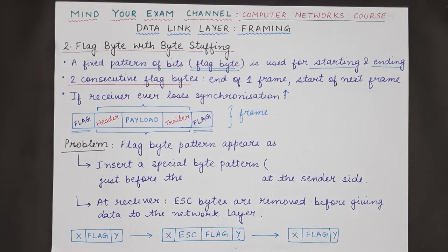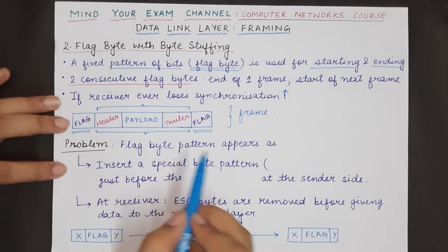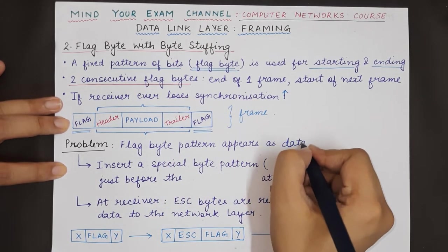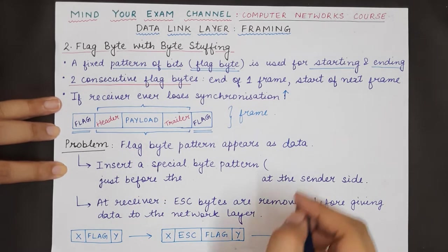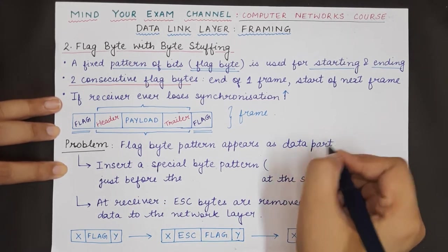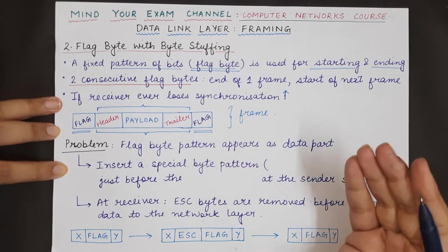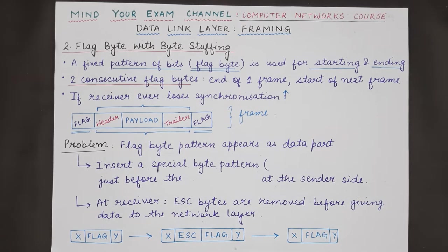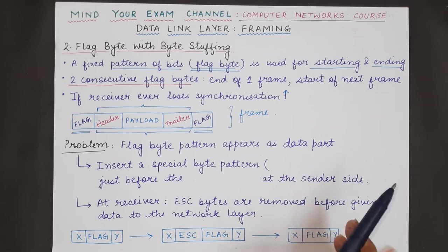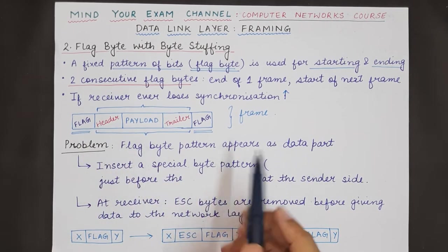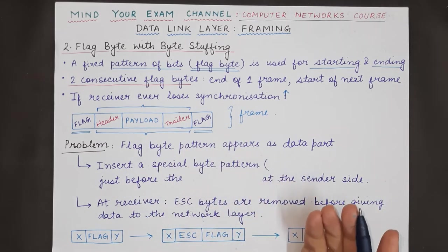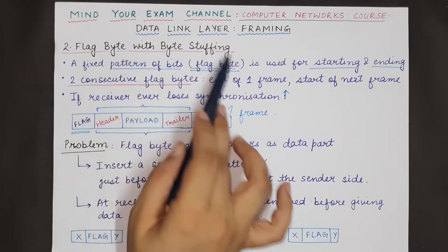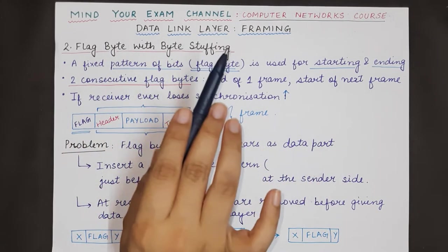The problem with this technique is that the pattern of the flag byte can appear as data itself. The pattern representing the flag may appear in the data part, and in that case the receiver would mistake it as the ending or beginning of a frame. We do not want the receiver to misunderstand a flag pattern in the data as the end of a frame, because it is actually data, not a flag byte.